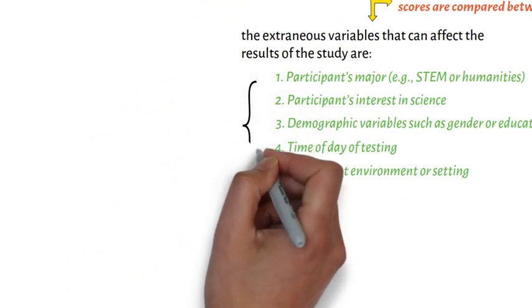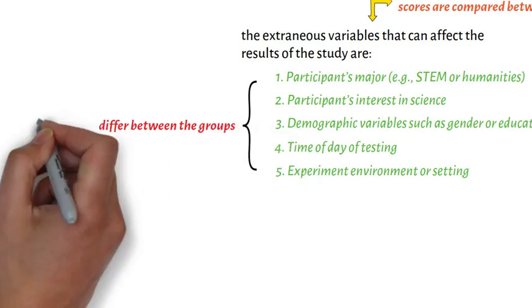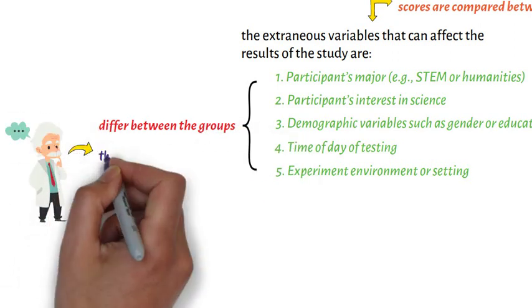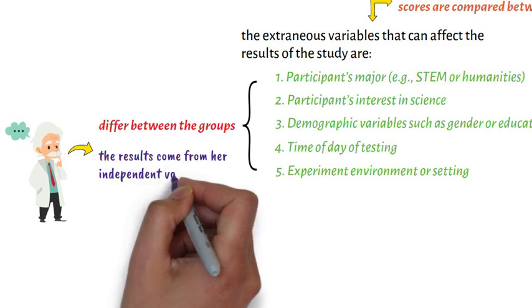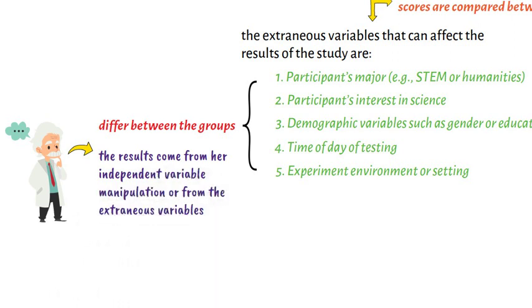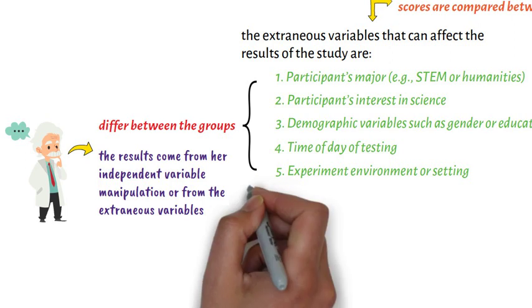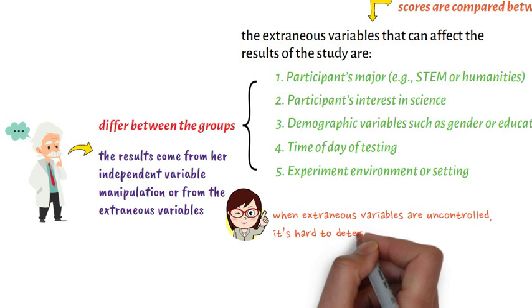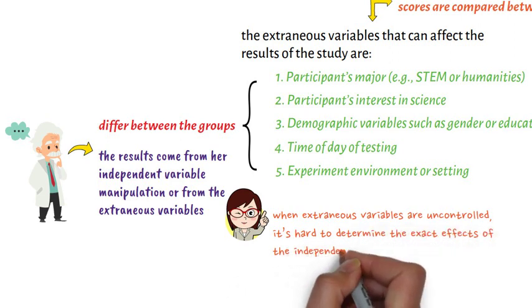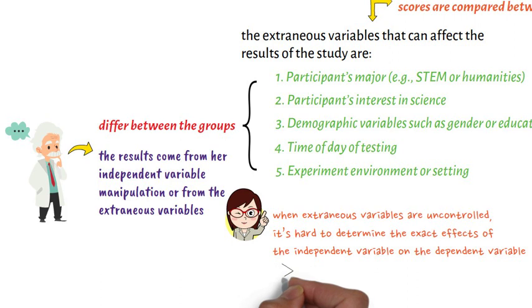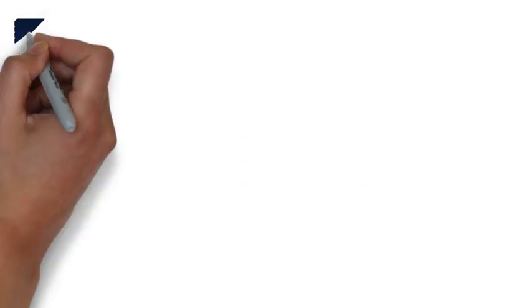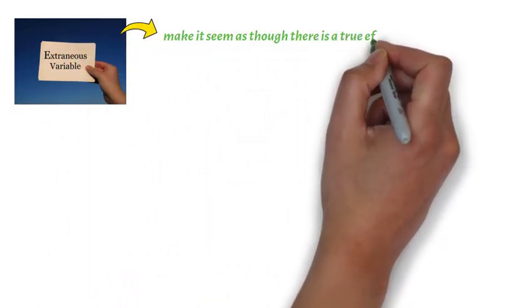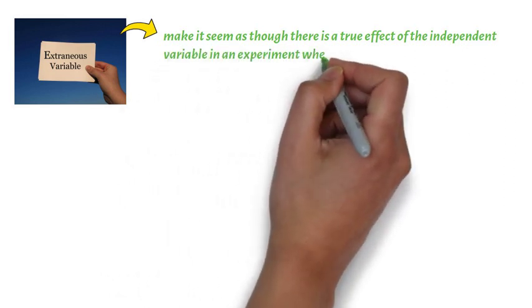If these variables systematically differ between the groups, the researcher can't be sure whether the results come from her independent variable manipulation or from the extraneous variables. When extraneous variables are uncontrolled, it's hard to determine the exact effects of the independent variable on the dependent variable, because the effects of extraneous variables may mask them. Uncontrolled extraneous variables can also make it seem as though there is a true effect of the independent variable when there's actually none.